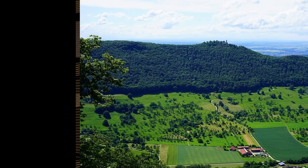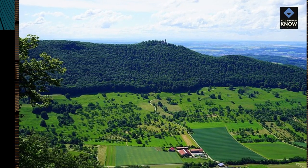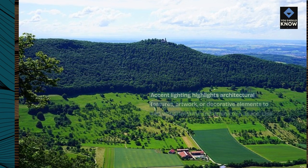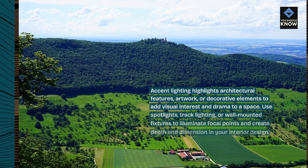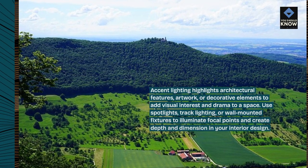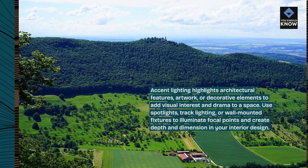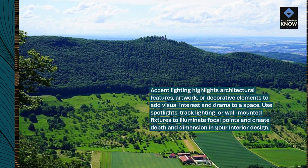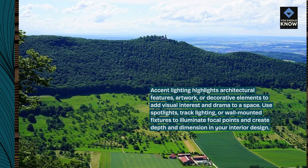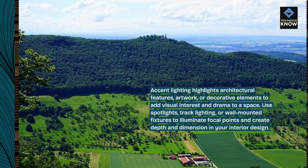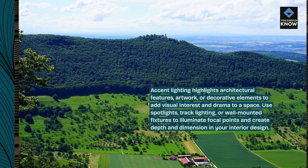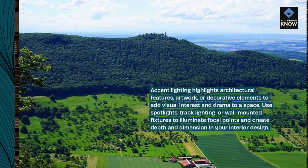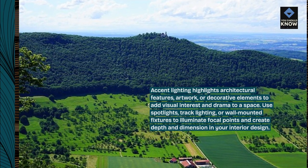Accent lighting highlights architectural features, artwork, or decorative elements to add visual interest and drama to a space. Use spotlights, track lighting, or wall-mounted fixtures to illuminate focal points and create depth and dimension in your interior design.